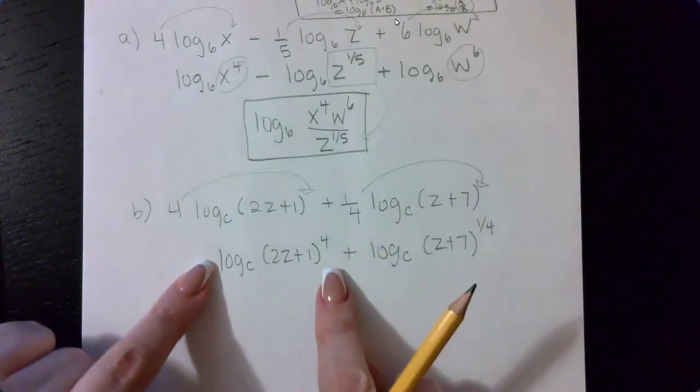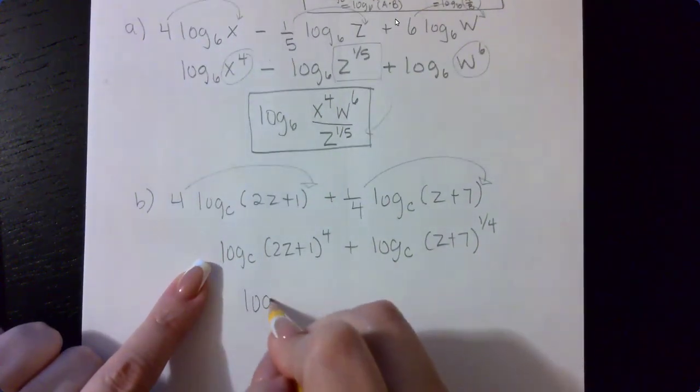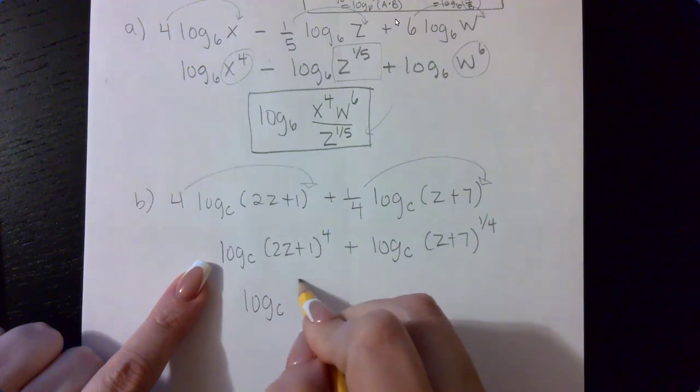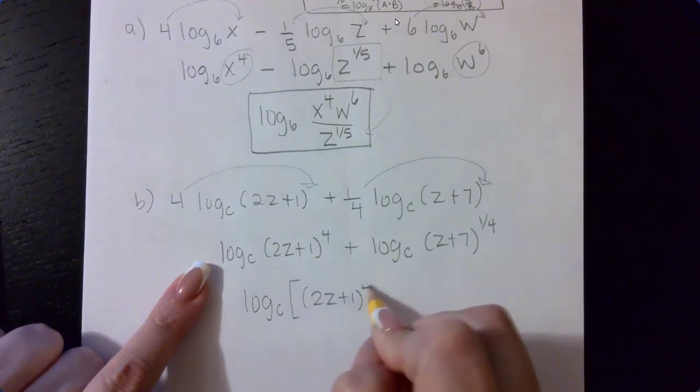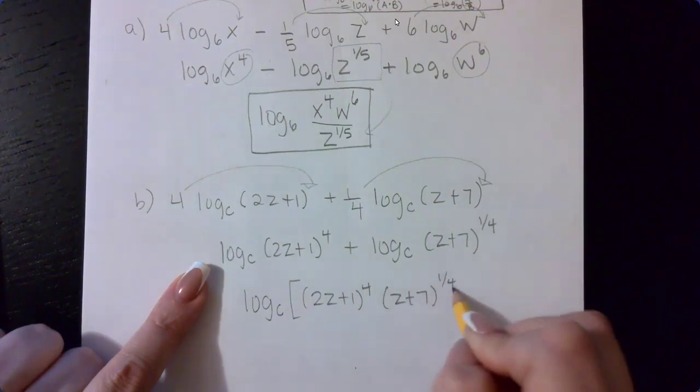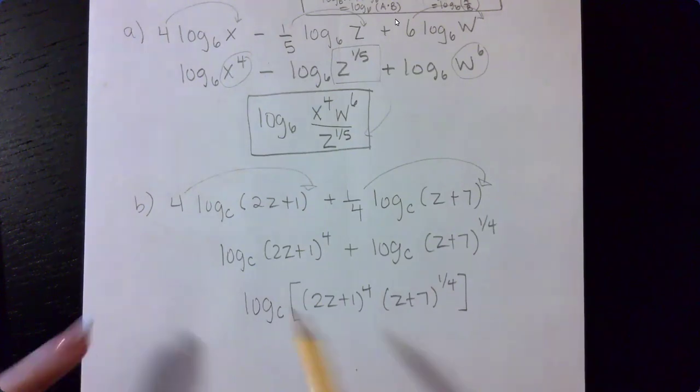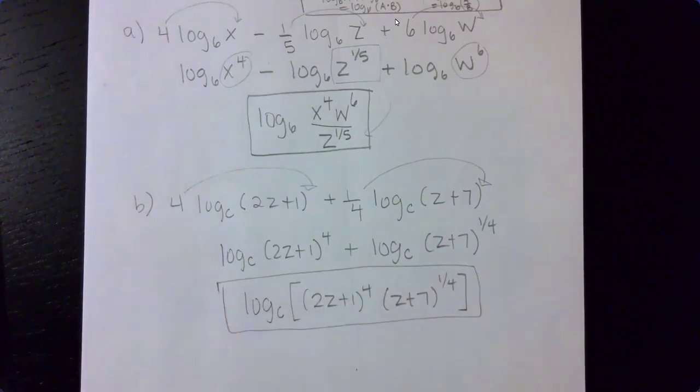Now here we only have a positive log and another positive log, which means there is no division bar. So we're going to have this first argument times the second argument. And there's nothing else to do there. It is now in one single logarithmic expression.